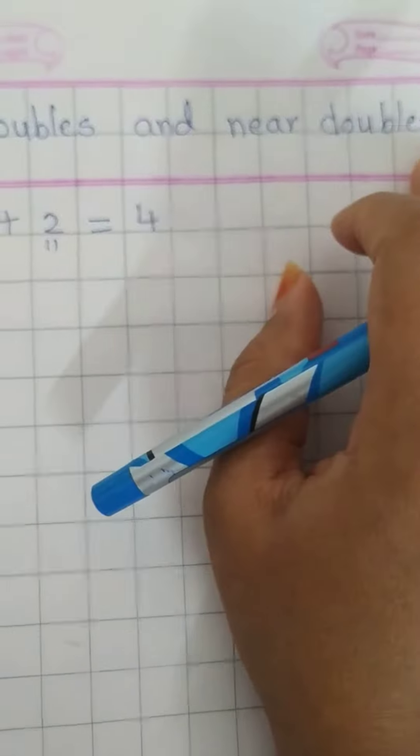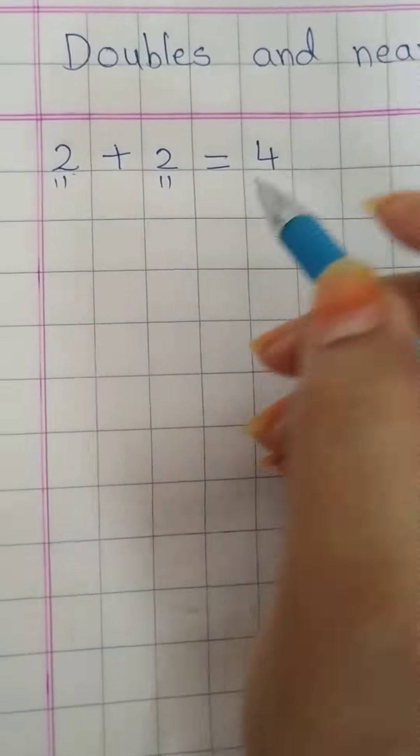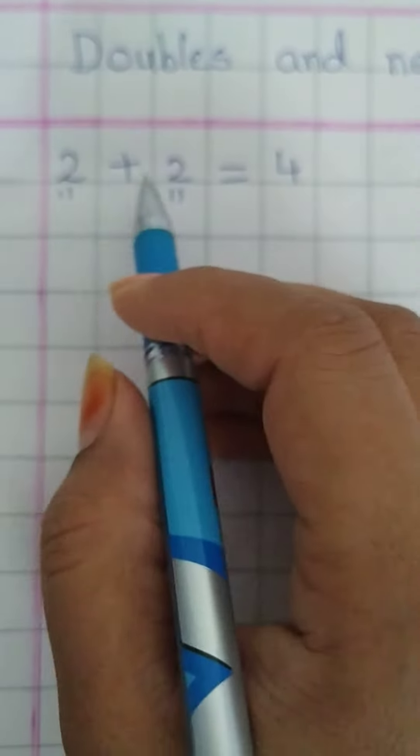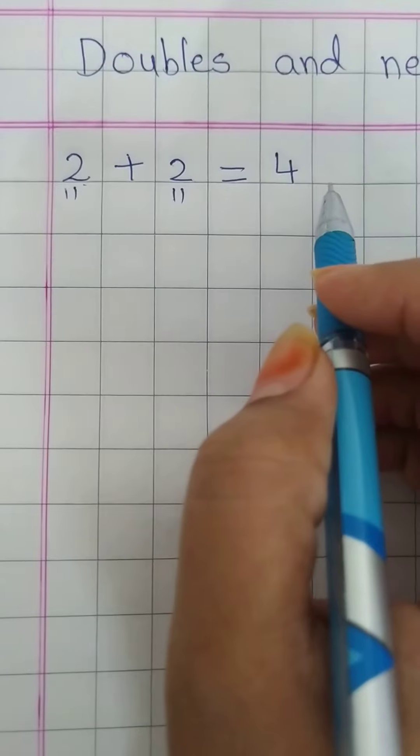Hello everyone, today our topic is doubles and near doubles. We take a number 2. What is the double of 2? 2 plus 2 is equal to 4.